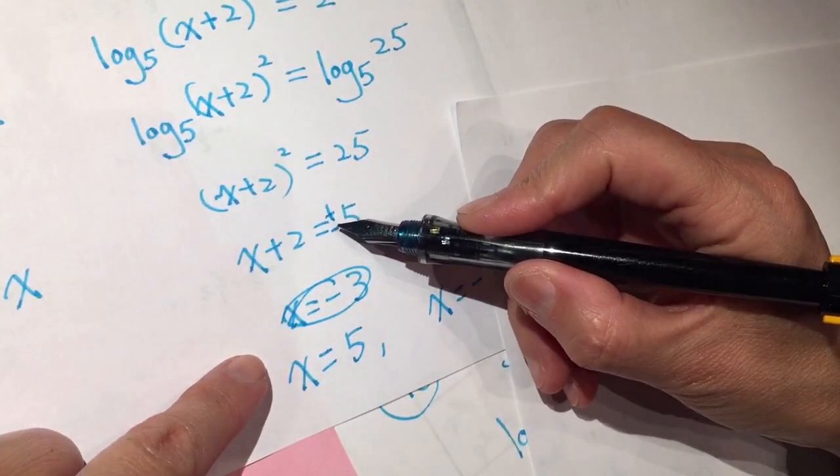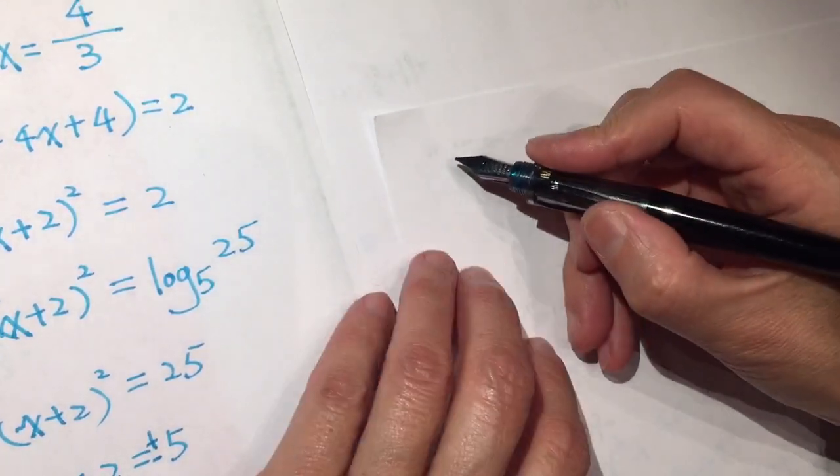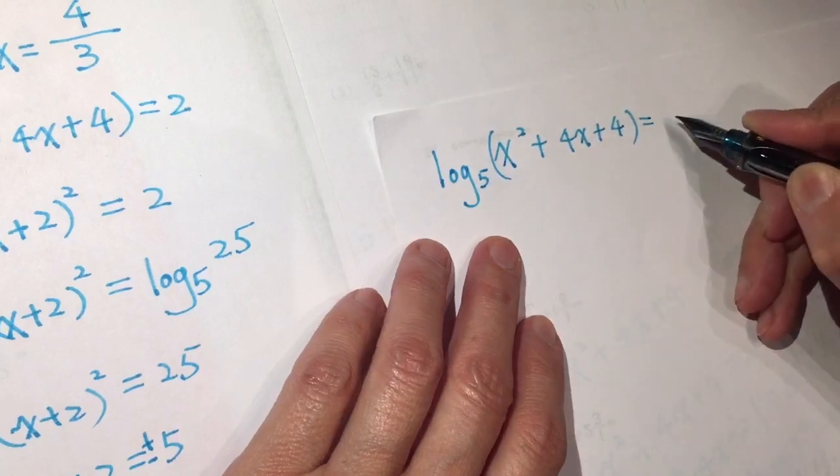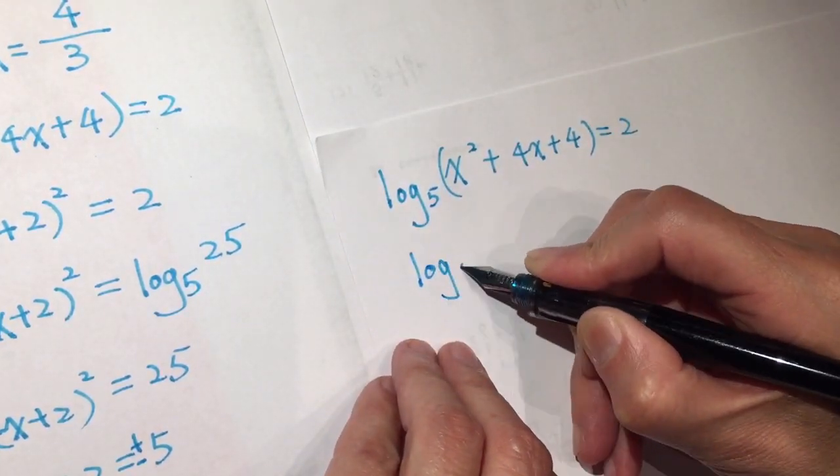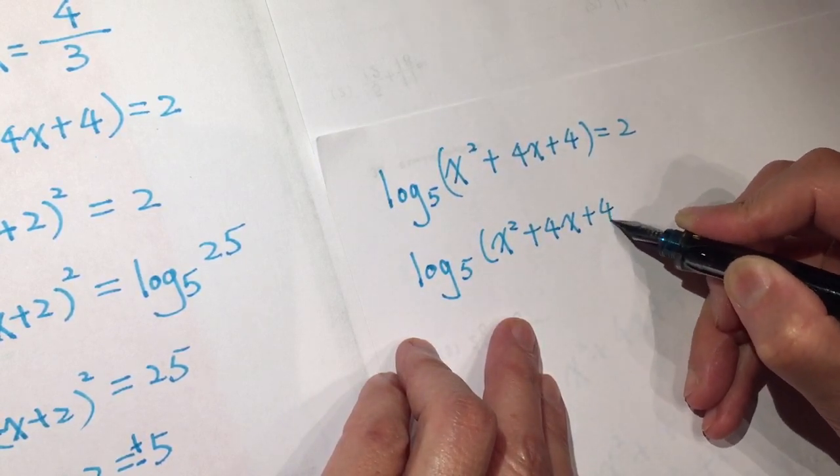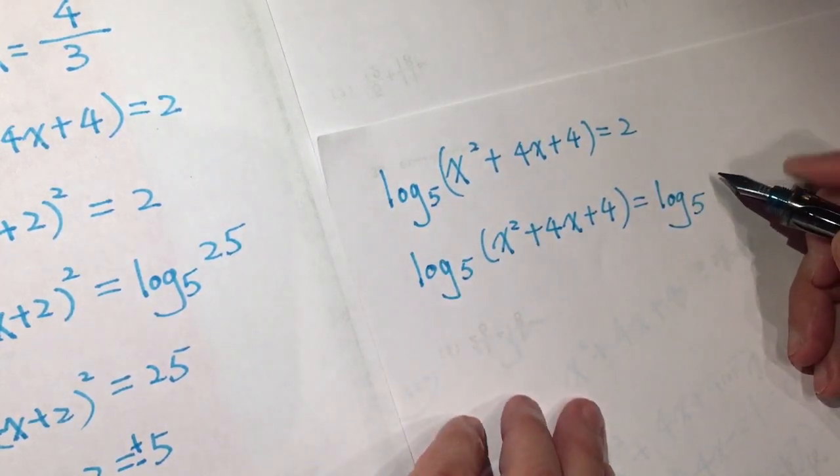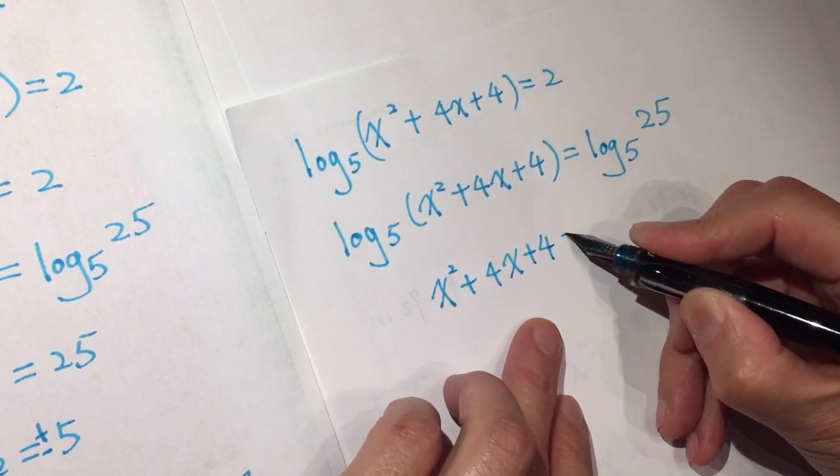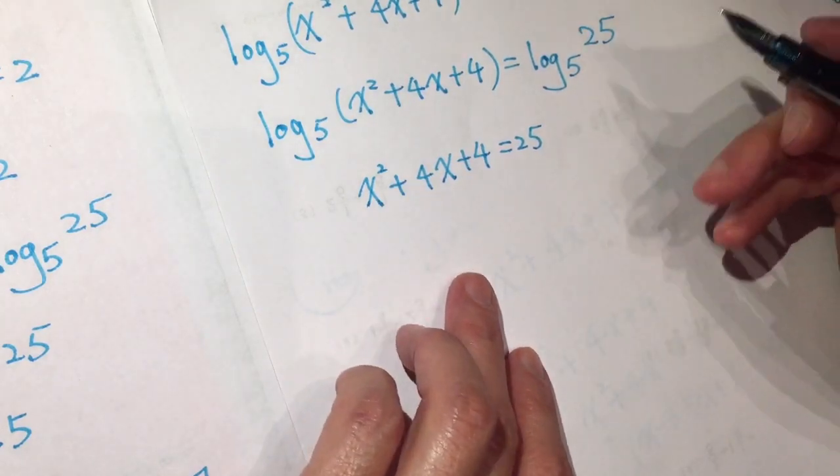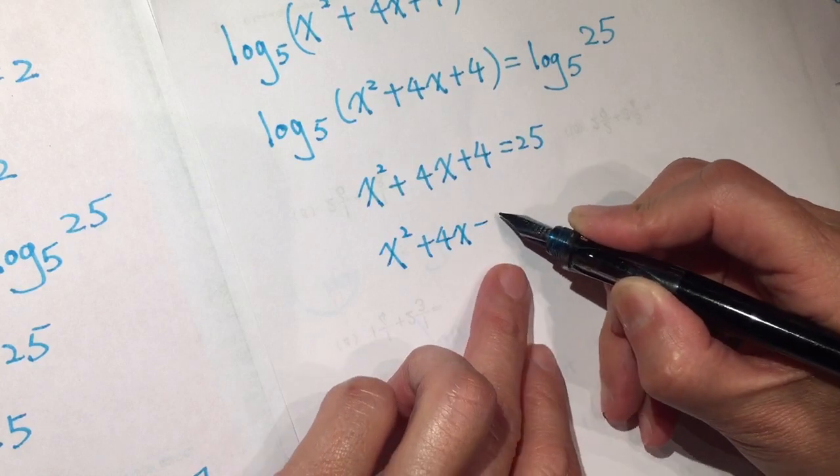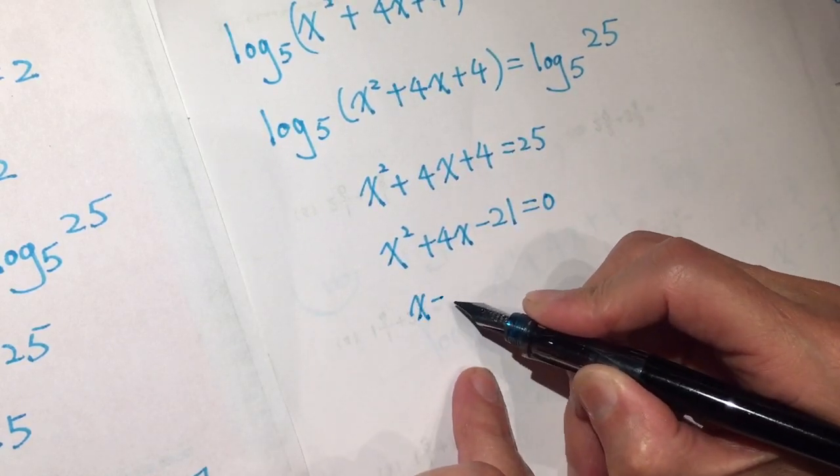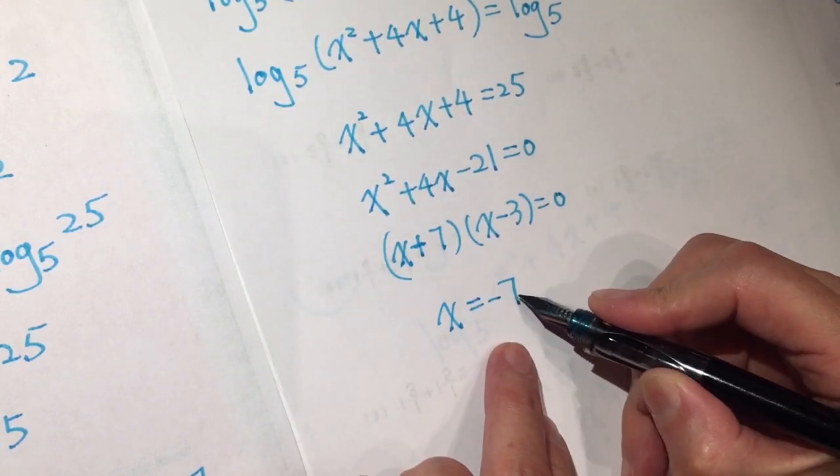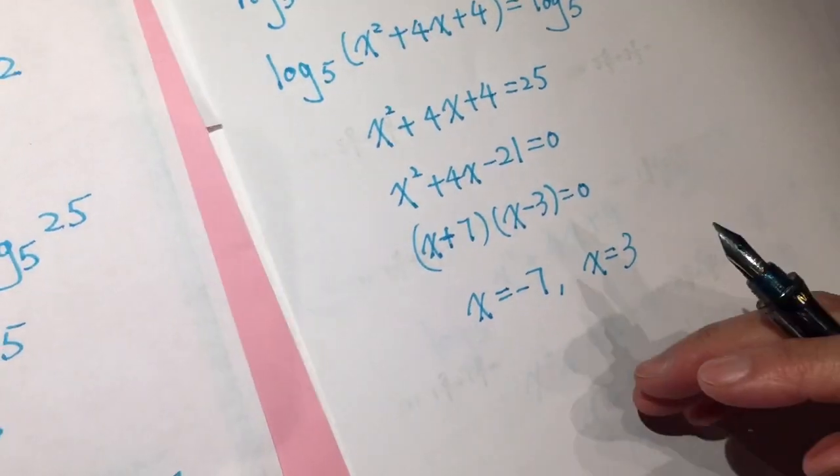Let me show another way. Log 5 of x squared plus 4x plus 4 equals log 5 to the power of 2, which is 25. So x squared plus 4x plus 4 equals 25. X squared plus 4x minus 21 equals 0. X minus 3 times x plus 7. X equals negative 7, x equals positive 3. So there are two answers.